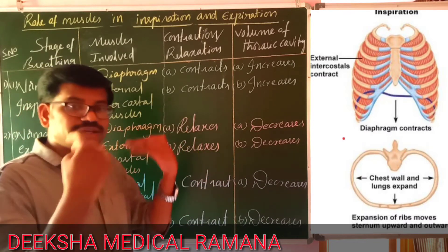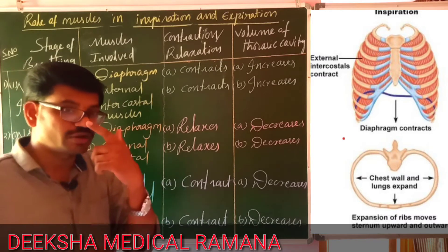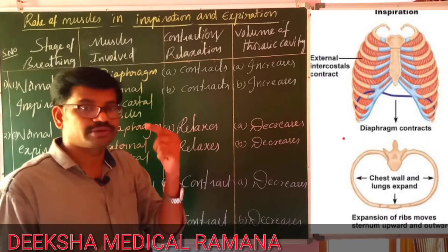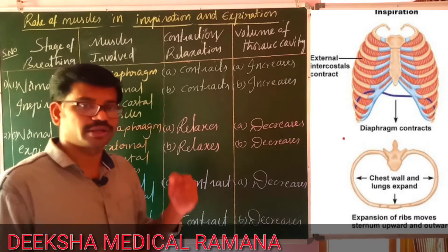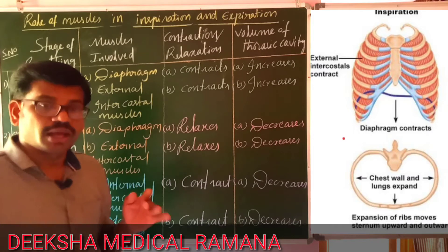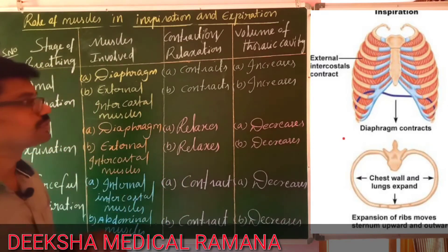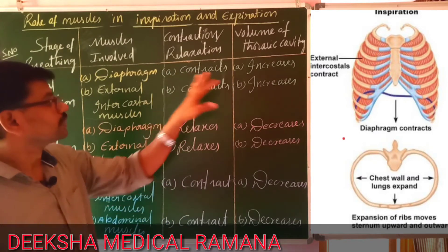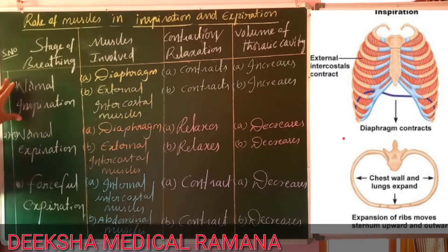Atmospheric air enters into the lungs through the external nostrils, nasal cavity, pharynx, larynx, trachea, bronchium, bronchioles, and alveoli — finally reaching into the alveoli. I think you have now understood about normal inspiration.